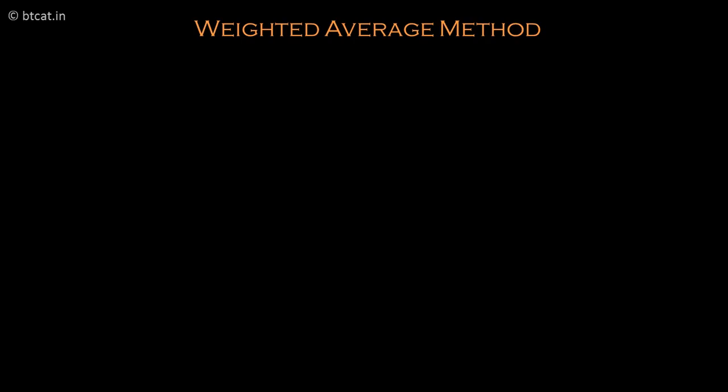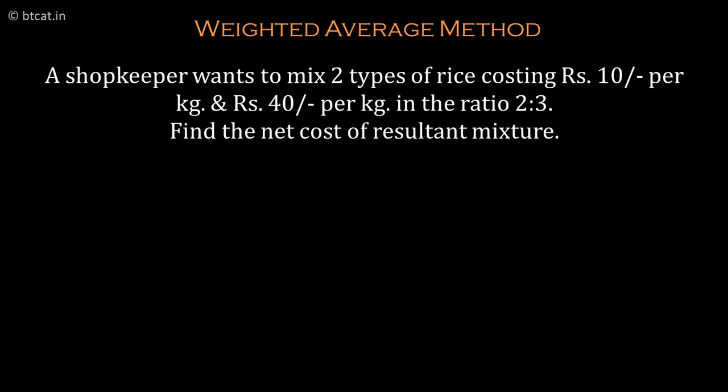The concept of allegation is a very important and tricky concept. First of all, it is completely inverse of a concept called weighted average. Let us understand both of them. Weighted average is when we are given two quantities — say a shopkeeper wants to mix two types of rice costing 10 rupees per kg and 40 rupees per kg in the ratio of 2 is to 3. Find the net cost of the resultant mixture.